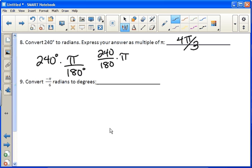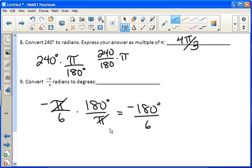Number 9, convert negative pi over 6 radians to degrees. To get to degrees, we do the opposite. We multiply by 180 over pi. The pi's cancel out. We get negative 180 over 6, which is negative 30 degrees.